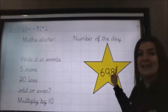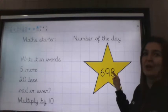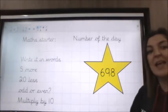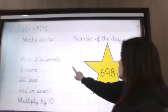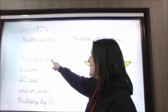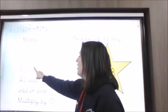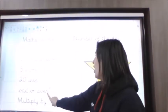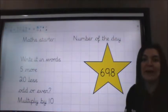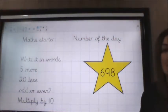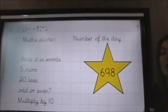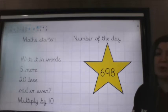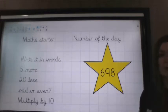So you've got this number here — I'm not going to say it because it's one of your challenges. You've got to do these things: write it in words, write 5 more, 20 less, say whether it's an odd or even number and then multiply it by 10. Pause the video now, get out your purple book and have a go at this little challenge to get your brains warmed up.